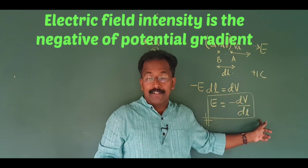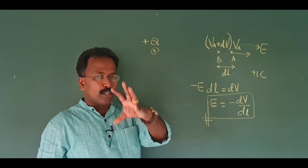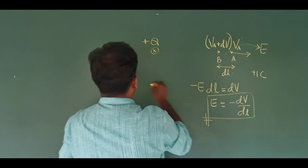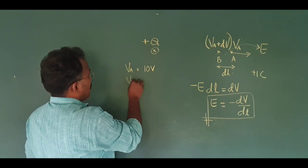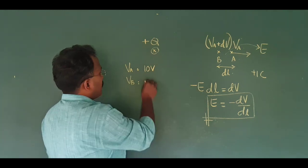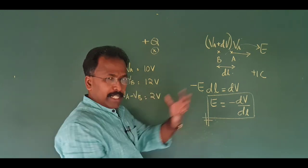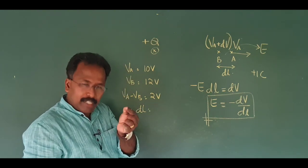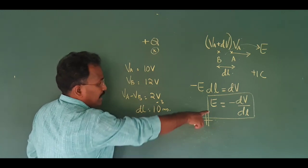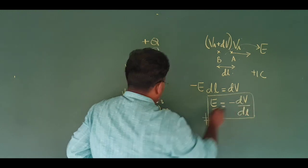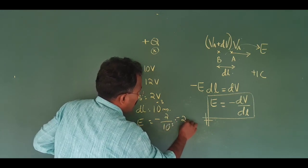Now, the potential at A: what is the value of V_A? It is 10 volts. V_B — what is the value? V_A plus dV is equal to 12 volts. The potential difference V_A minus V_B is equal to 2 volts. dL is equal to 1 millimeter, which means 10 to the power minus 3 meters. The electric field intensity E is equal to minus dV by dL, which is 2 divided by 10 to the minus 3, which means minus 2000.